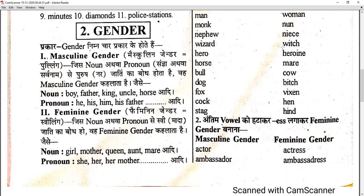This is what we have done in childhood and what we know from our past: dog and bitch, stag and hind, wizard and witch, nephew and niece, man and woman, monk and nun. This topic is included in our syllabus and we will have to learn more today.